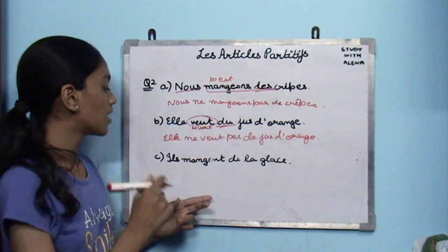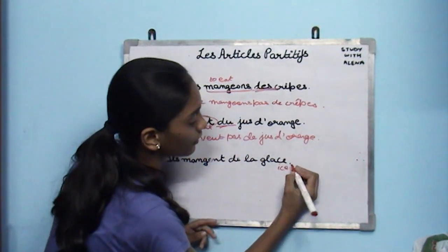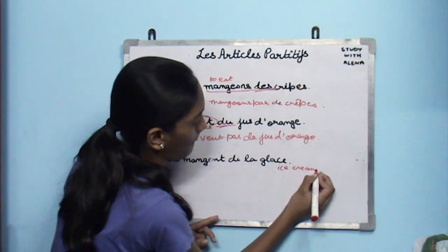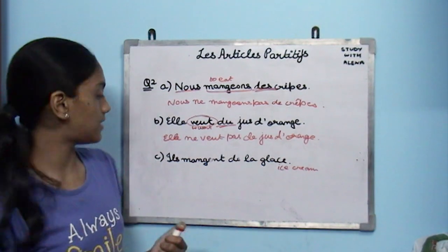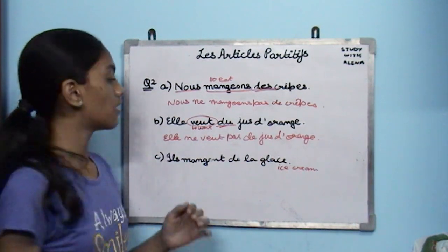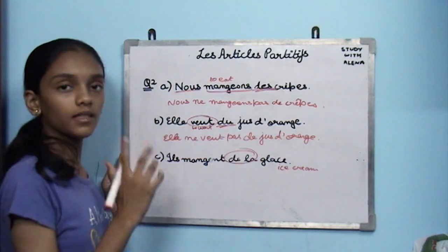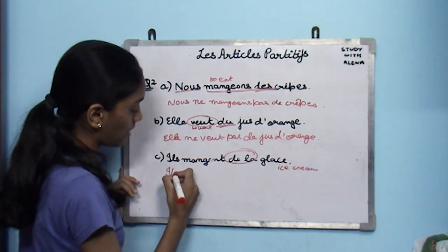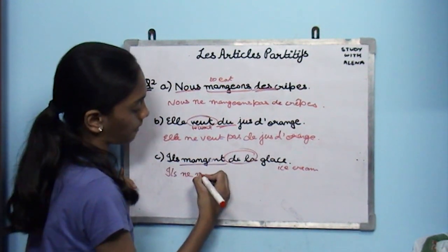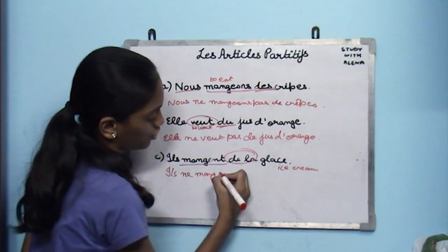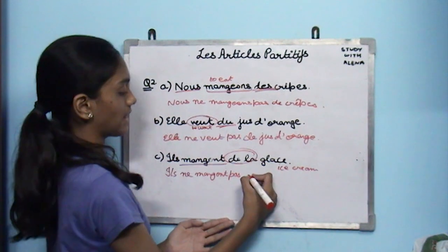Next: ils mangent de la glace. Glace is ice cream. Manger is to eat — they are eating ice cream. The article partitif is de la. The negative form is: ils ne mangent pas de glace.